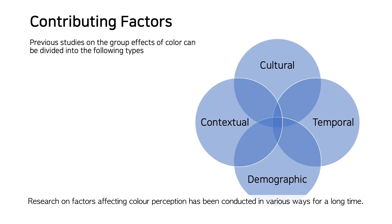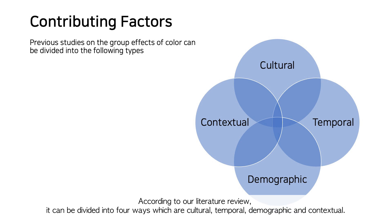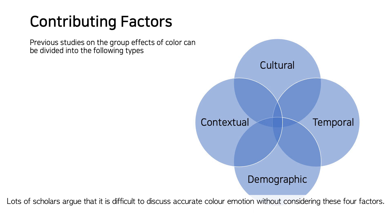Research on factors affecting color perception has been conducted in various ways for a long time. According to our literature review, it can be divided into four categories: cultural, temporal, demographic, and contextual. Many scholars argue that it is difficult to discuss accurate color emotion without considering these four factors.